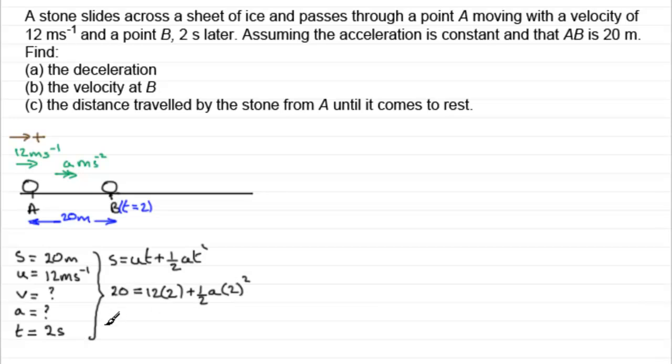So if we work this out, we've got therefore 20 equals, well 12 times 2 is 24. And then we've got half of 4 which is 2, so we've got plus 2A. Take away 24 from both sides, that gives us minus 4 equals 2A. So we'll just come down here and complete it off. We've got therefore minus 4 equals 2A. Divide both sides by 2 and you end up with the acceleration A being minus 4 divided by 2 which is minus 2. Minus 2 meters per second per second. So we expected the negative because we know it's slowing down.